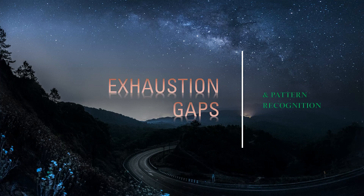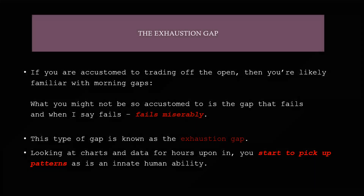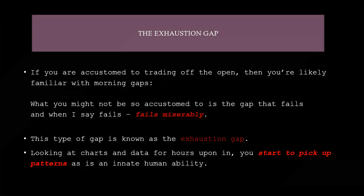So you want to know what we're doing — obviously we're trading gaps, this is no secret. But how are we doing it? Pattern recognition. It's an innate human ability and I suggest taking advantage of it. That's what we've been doing and what people are picking up on very quickly. So what is an exhaustion gap?